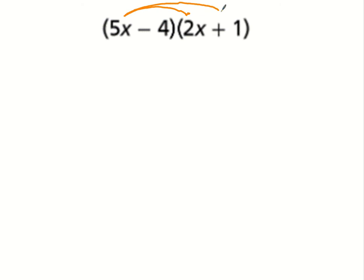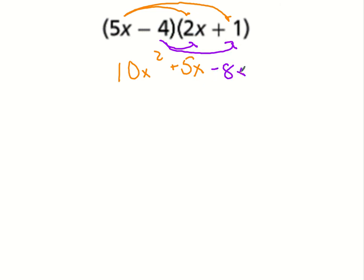So I'm going to do 5x times 2x and then 5x times 1. 5x times 2x: 5 times 2 is 10, x times x is x squared — so 10x squared. 5x times 1 is just 5x. Then I do the same with negative 4: negative 4 times 2x is negative 8x, negative 4 times 1 is negative 4. Combining like terms: 10x squared, then 5x and negative 8x give negative 3x, minus 4.